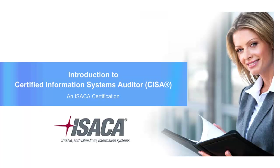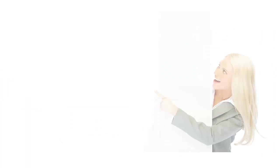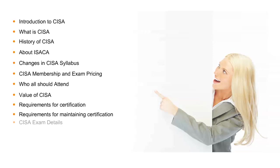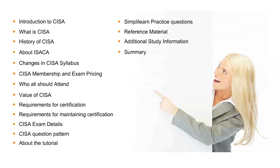Let's begin with the agenda of this introductory lesson. In this section, we shall look at 15 items, all of which are relevant towards you successfully preparing, sitting, and passing the CISA Certification exam, which is an internationally recognized certification. We will first discuss CISA, its history, and its accreditation board, ISACA. This is followed by CISA syllabus changes, CISA membership and exam pricing, its audience, value of certification, and its requirements. Next, we will discuss requirements for maintaining certification, followed by exam details and question patterns.